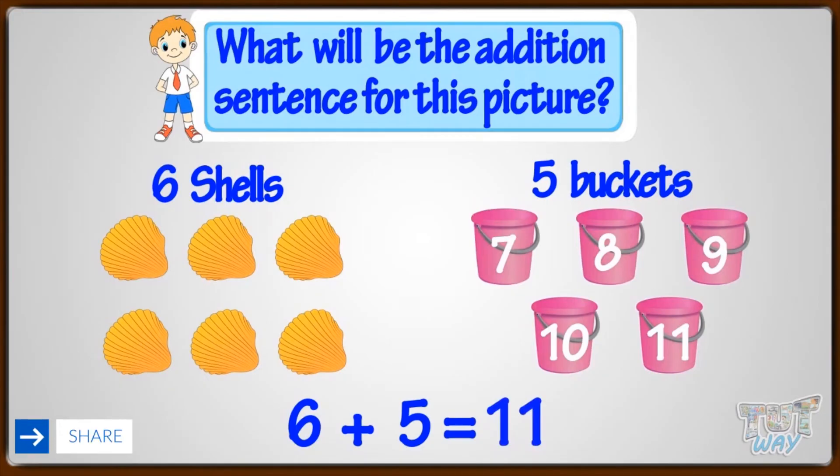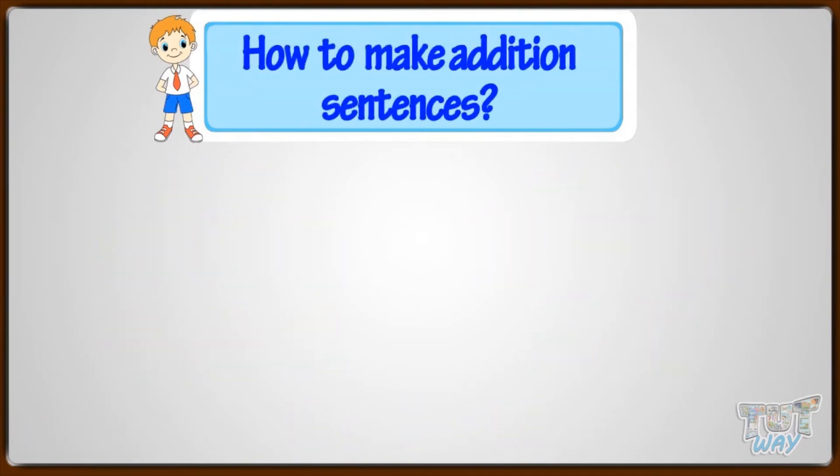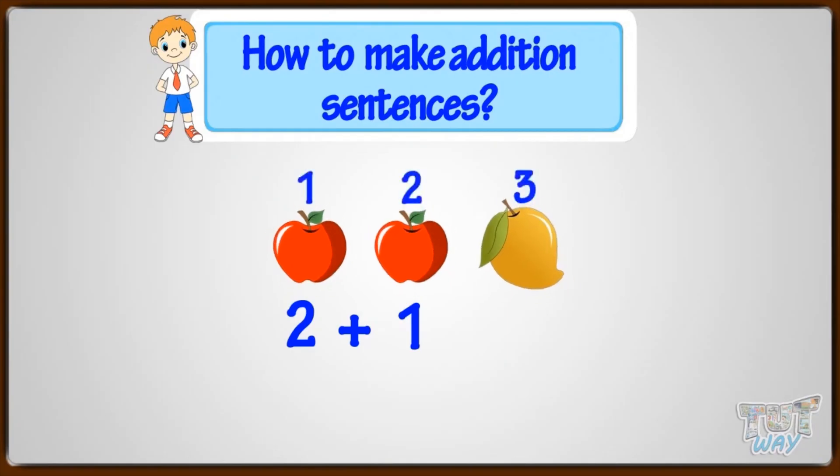Good! So, what have we learned? We have learned how to make addition sentences. We need to count the number of things separately and write them with a sign of plus between them, like this. And then, count the number of things all together and write with a sign of equal, like this. And the addition sentence is ready.